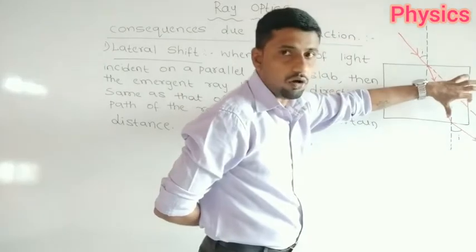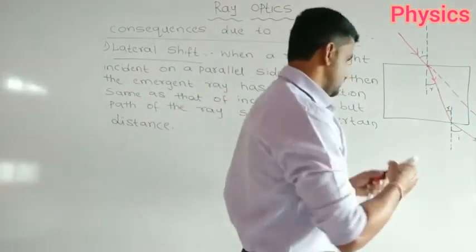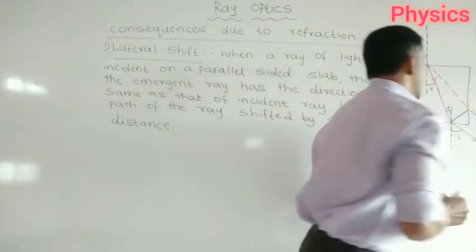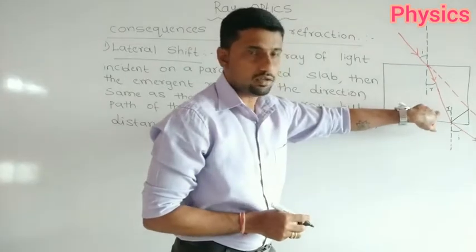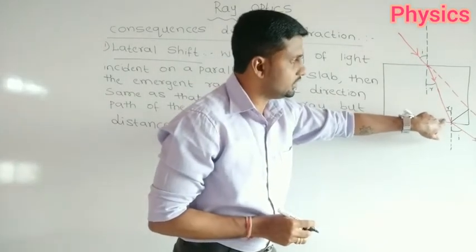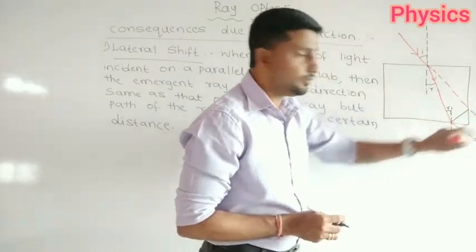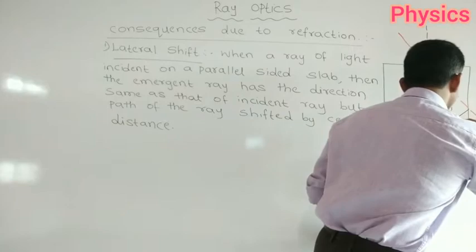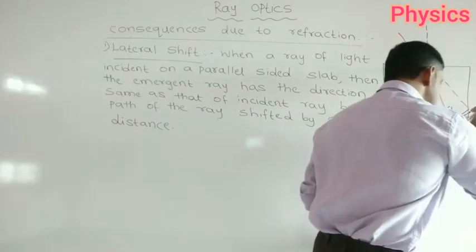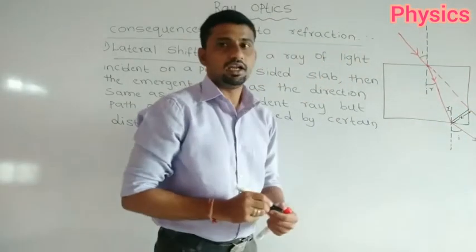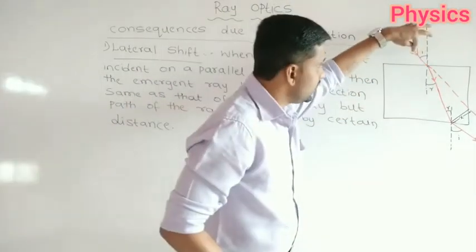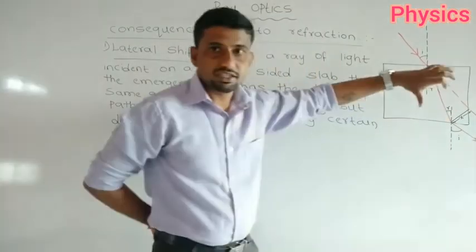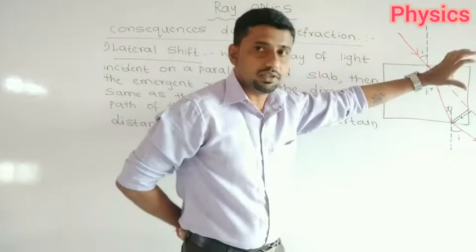See, actually the incident ray should go straight, but because of refraction it bends towards the normal - there is a shift in the path of the ray of light. From the actual path to where it bends, there will be some distance between them. That distance I am taking as X. This distance is called the lateral shift.